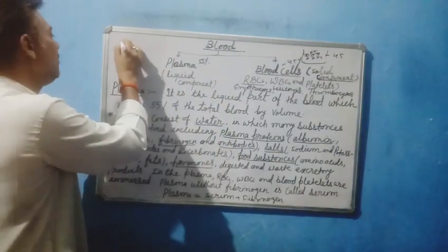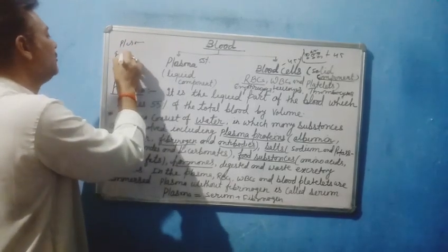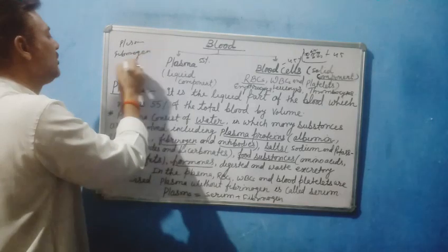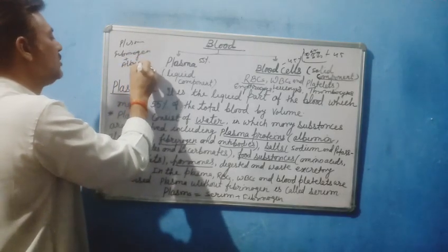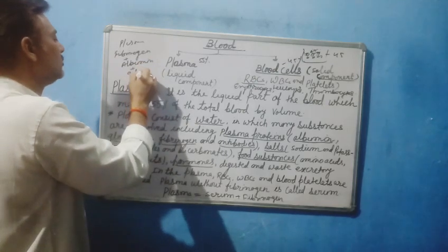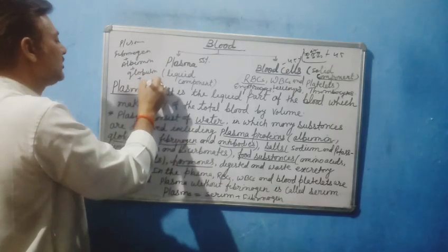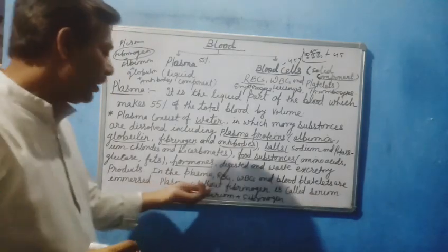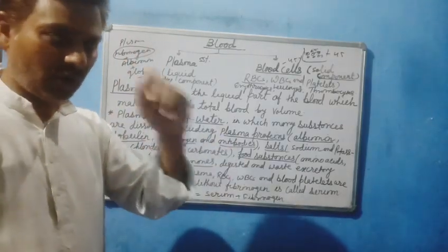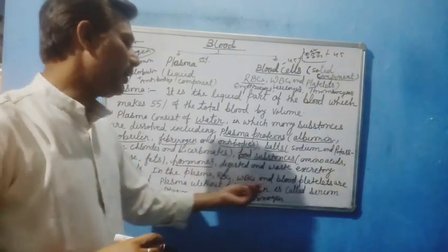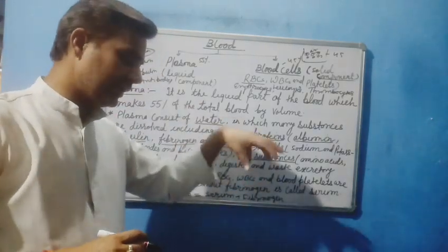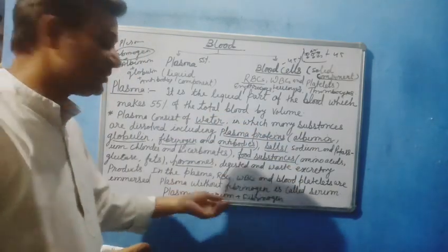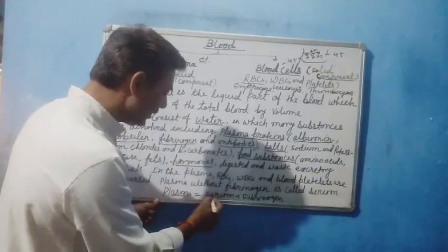In plasma, the proteins are fibrinogen, albumin, globulin, and antibodies. If we remove the fibrinogen protein from plasma, it becomes serum. Plasma without fibrinogen is called serum. So plasma equals serum plus fibrinogen.